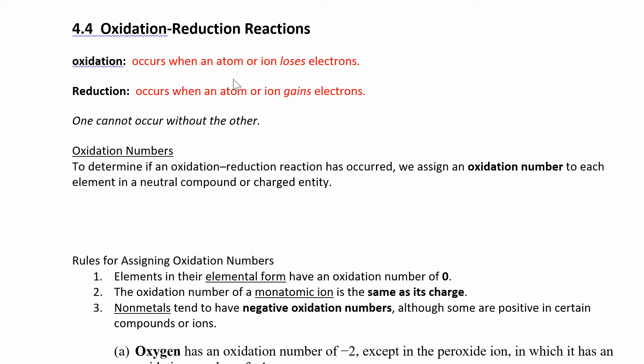Oxidation is when you are losing electrons, and reduction is when you gain electrons. If one species in the reaction is losing electrons, somebody else is picking them up and gaining the electrons — you can't really have one without the other. So if something's being oxidized, something else is being reduced.